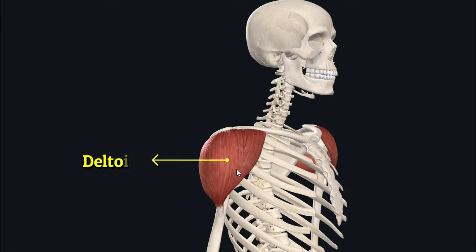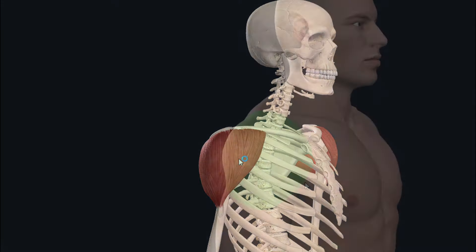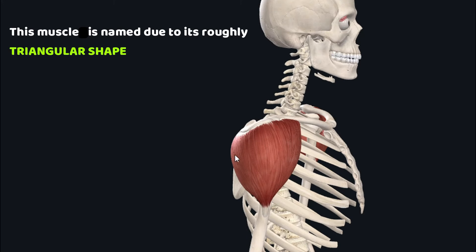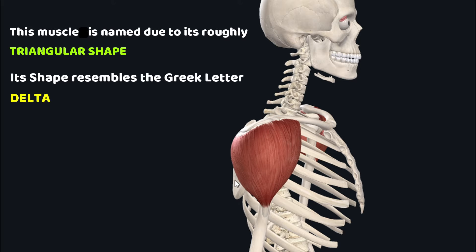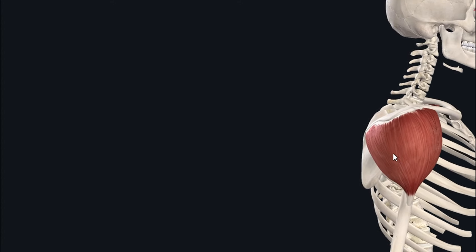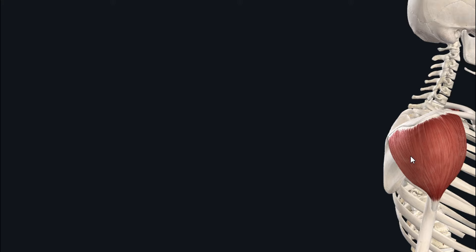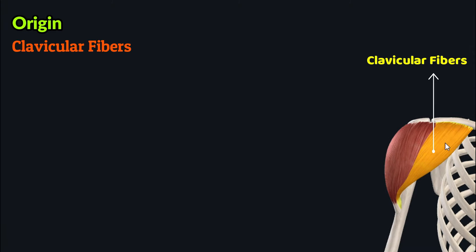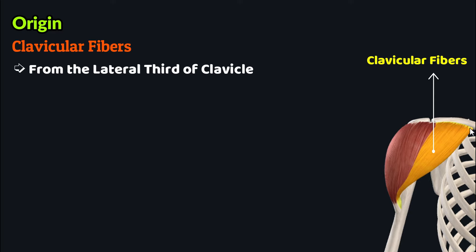The deltoid is the superficial muscle of the shoulder, responsible for its characteristic rounded outline. The deltoid is named for its roughly triangular shape, resembling the Greek letter delta. Anatomically, the deltoid consists of three sets of fibers named according to their origin. The anterior fibers are the clavicular fibers, which originate from the lateral third of the clavicle.